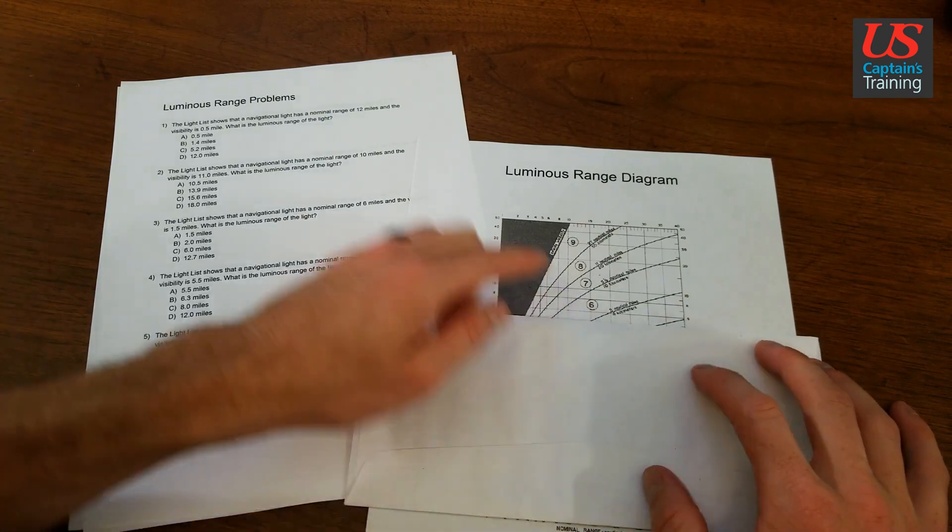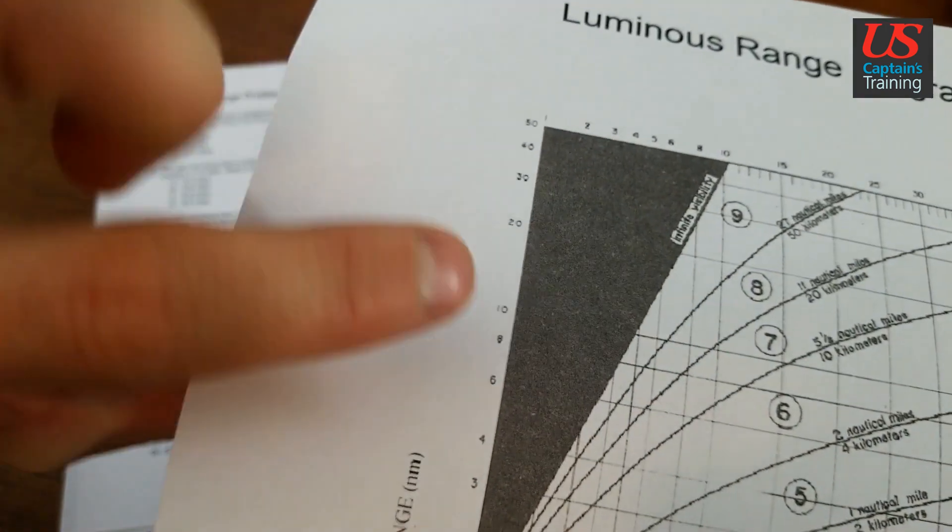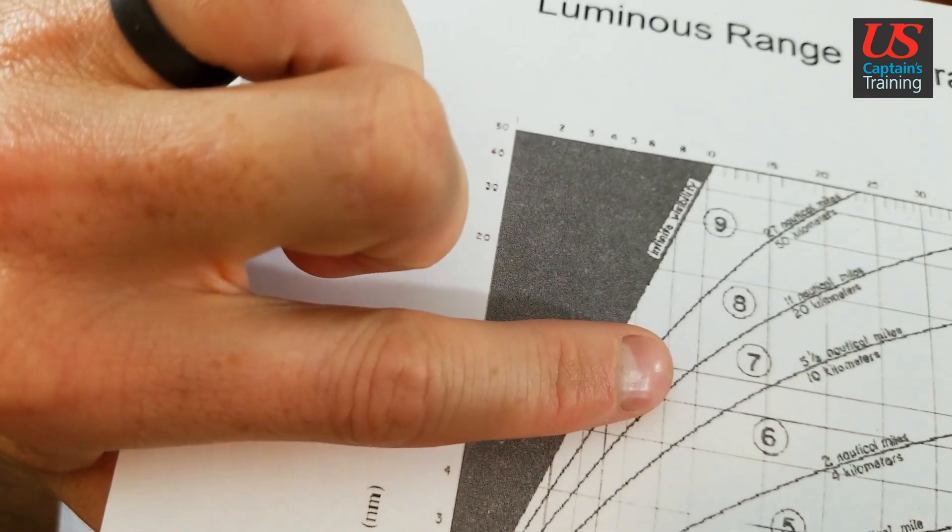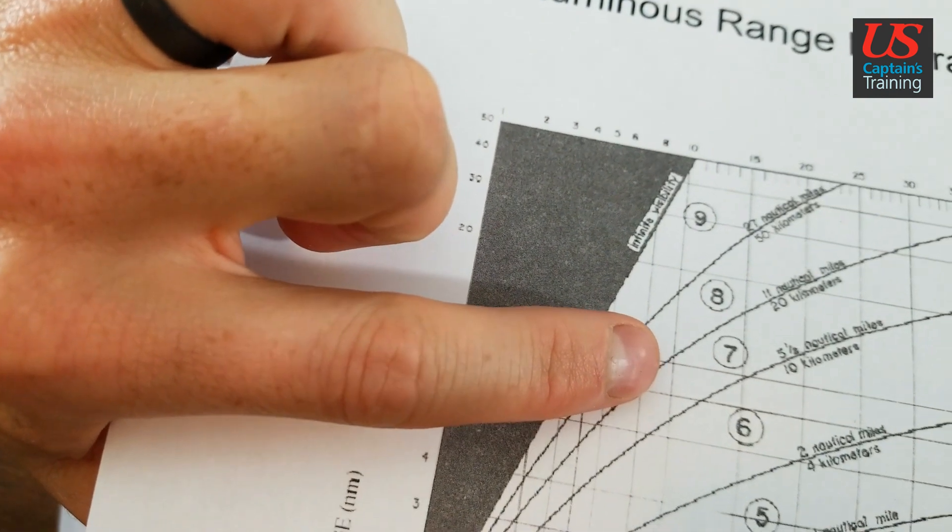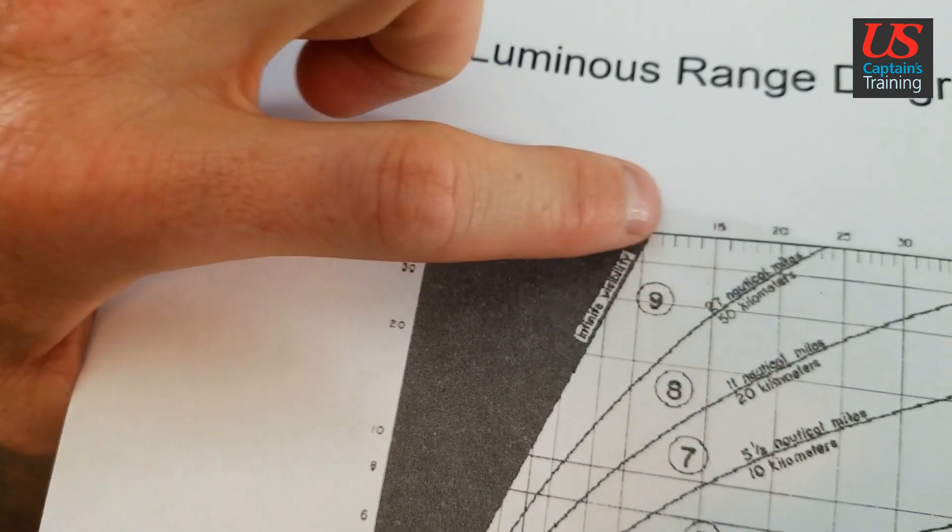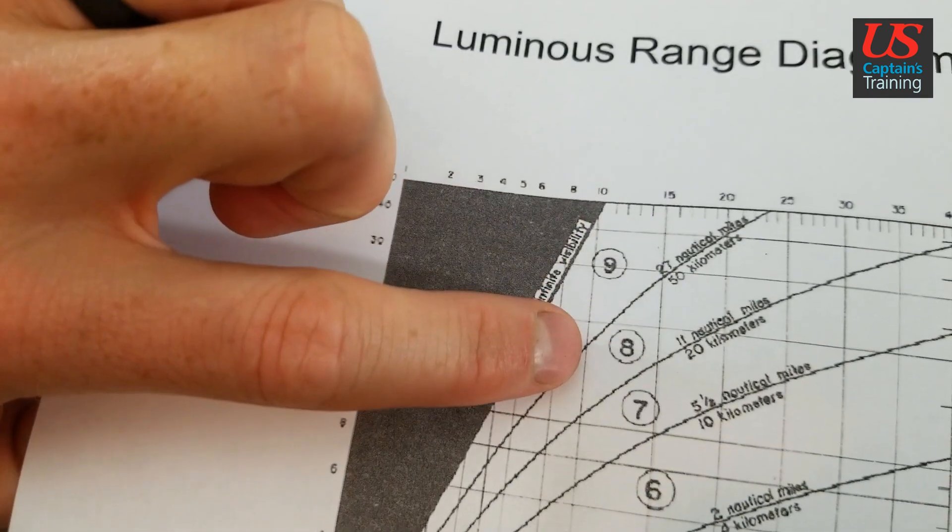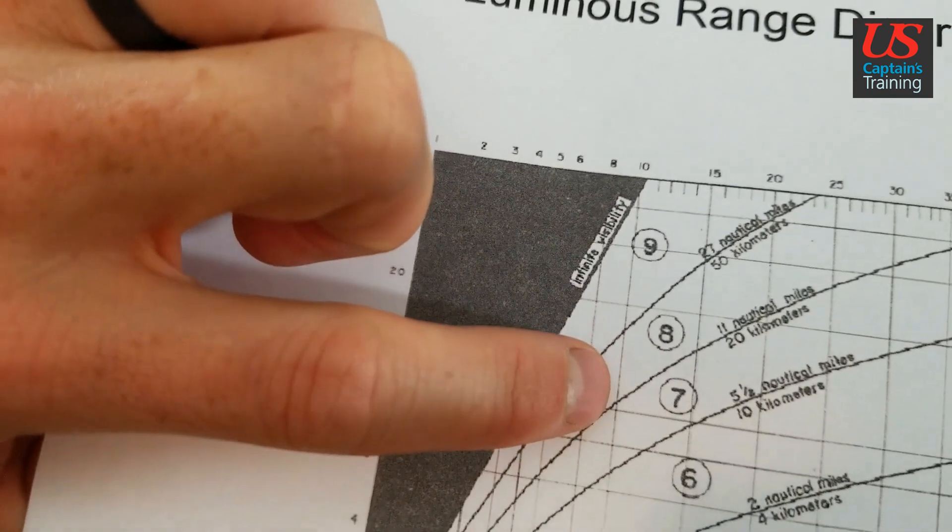You can see, I want to get this close so you can see it. You see where that curve lines up. So 10 nominal, follow it down to the 11 curve right there.